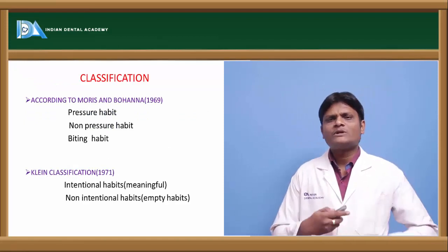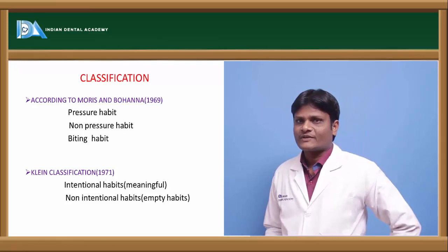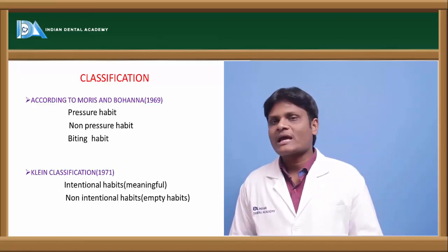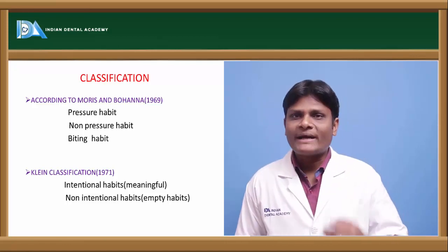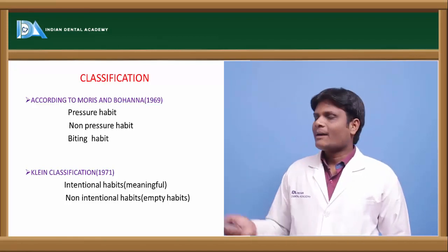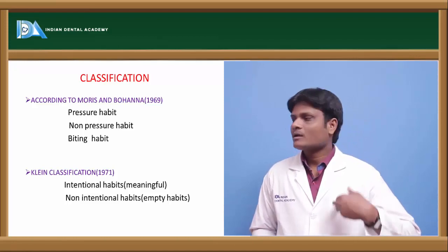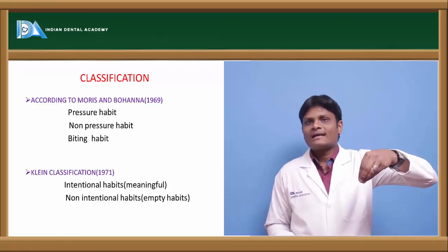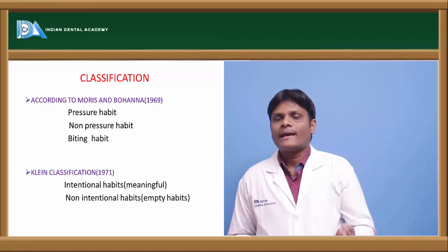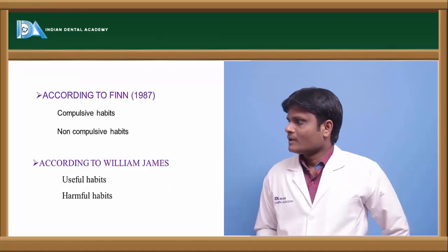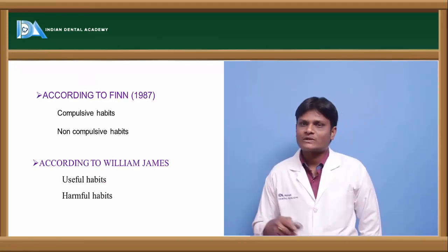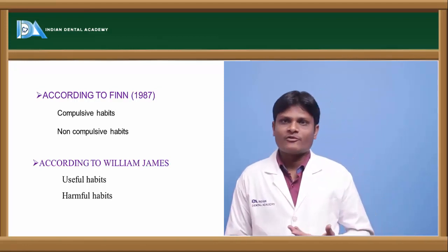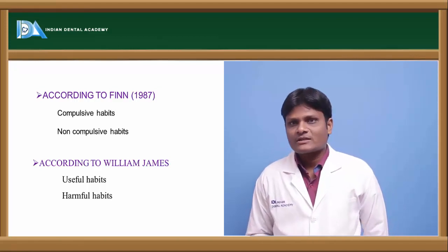Habits are classified into different kinds by different authors. According to Morris and Gohana, a habit can be a pressure habit, non-pressure habit, or a biting habit. According to Flynn, a habit might be intentional or meaningful, or non-intentional and meaningless. According to Finn, habits can be compulsive or non-compulsive. According to William James, habits can be classified into useful habits and harmful habits.